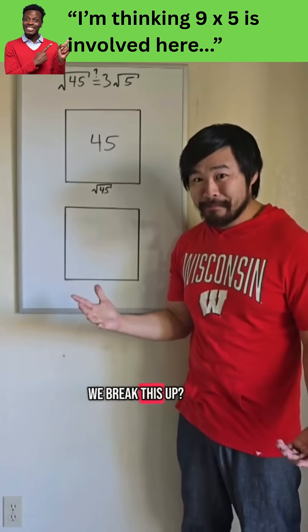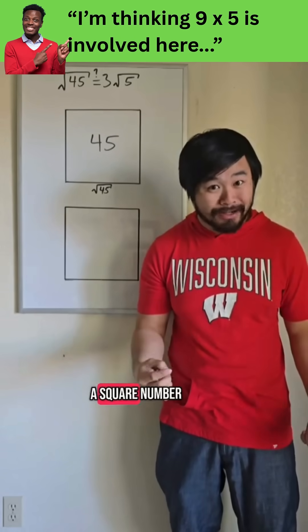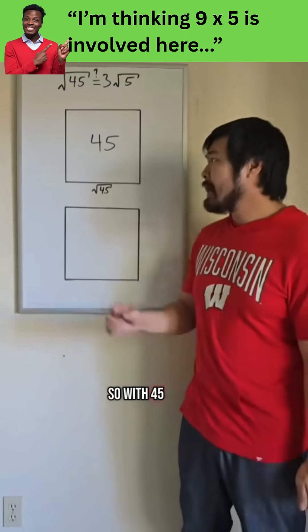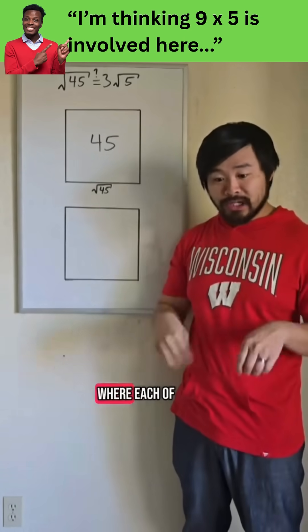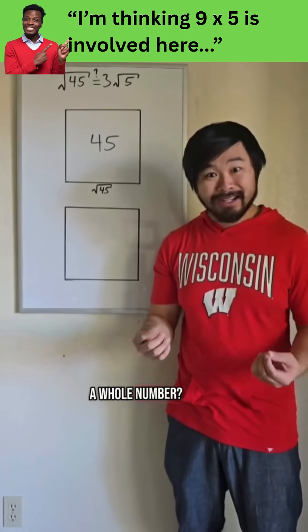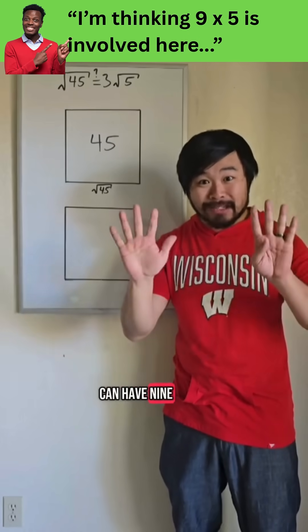Now how can we break this up? Remember, we need a square number of squares. So with 45, can I break this into 4 equal squares where each of the areas is a whole number? Nope, but I can have 9 squares of 5.